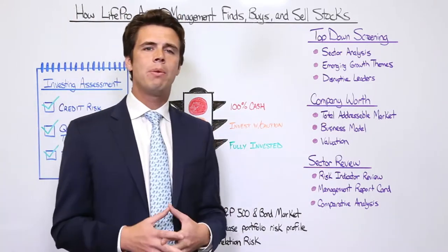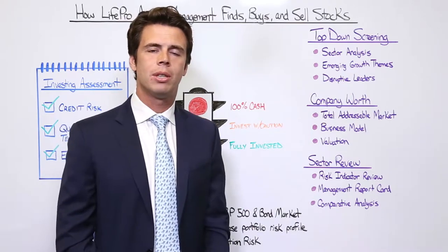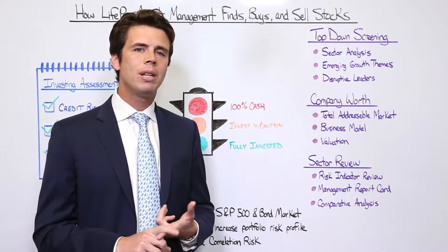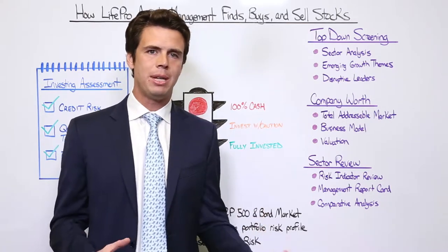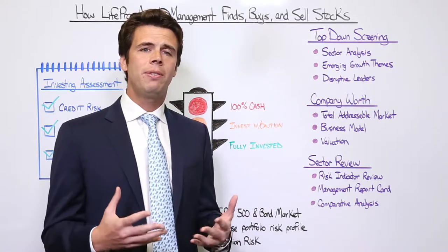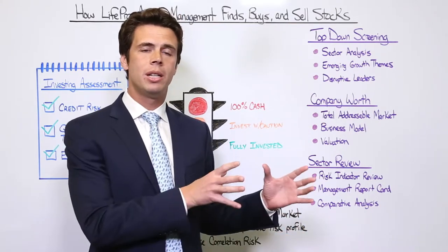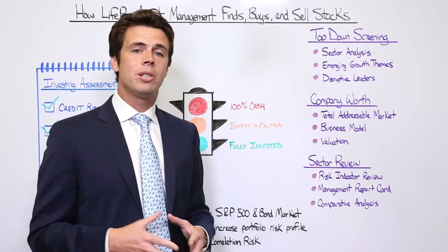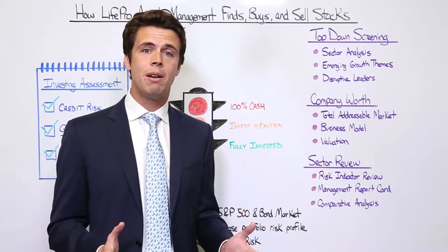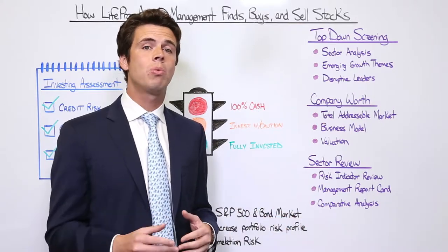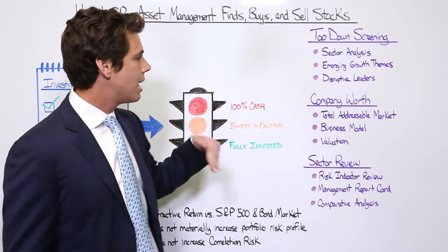Once we've identified Amazon as a company we like with a good long-term growth runway, we need to value it. The number one thing is the total addressable market — that's a fancy way of saying how big is the market opportunity, whether it's a billion or 200 billion dollars. With Amazon, we saw the entire retail space moving from hundreds of retailers to one dominant e-commerce platform, representing a multi-trillion dollar market opportunity. That's one of the reasons Amazon moved from a 60 billion dollar company to a 1 trillion dollar market cap company.